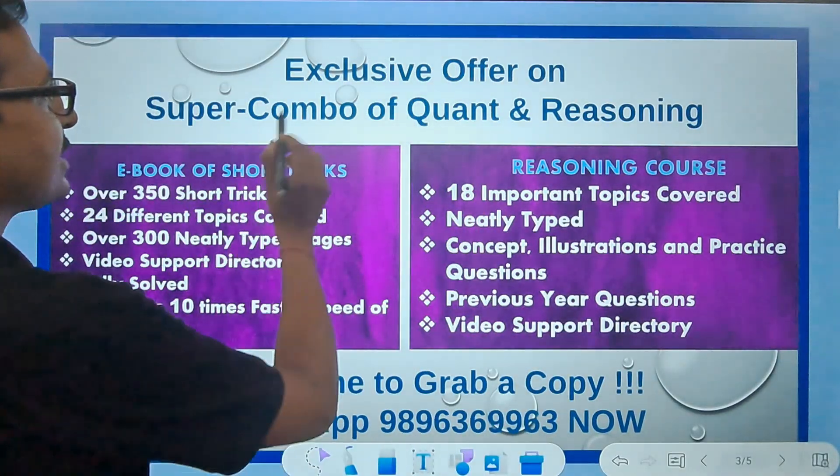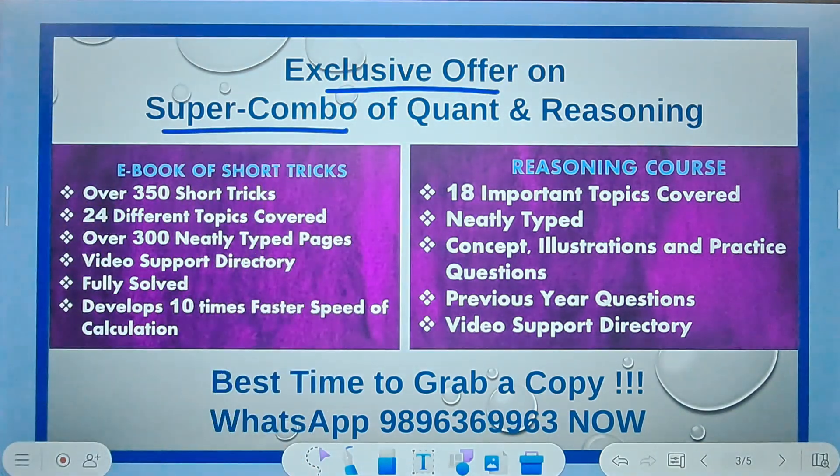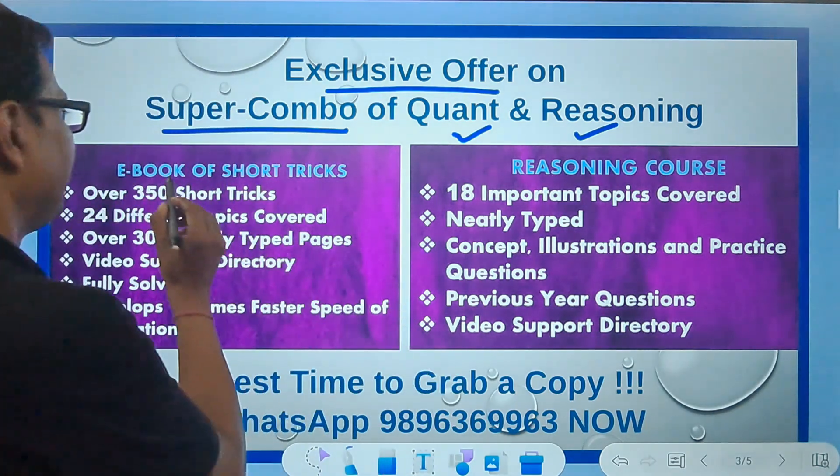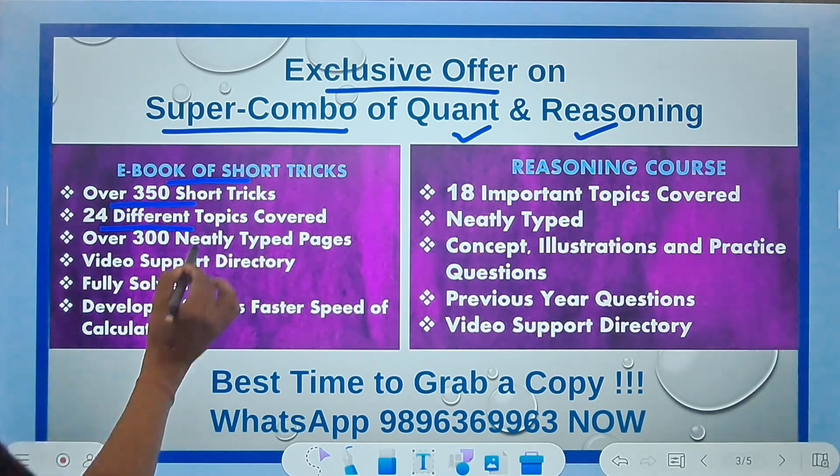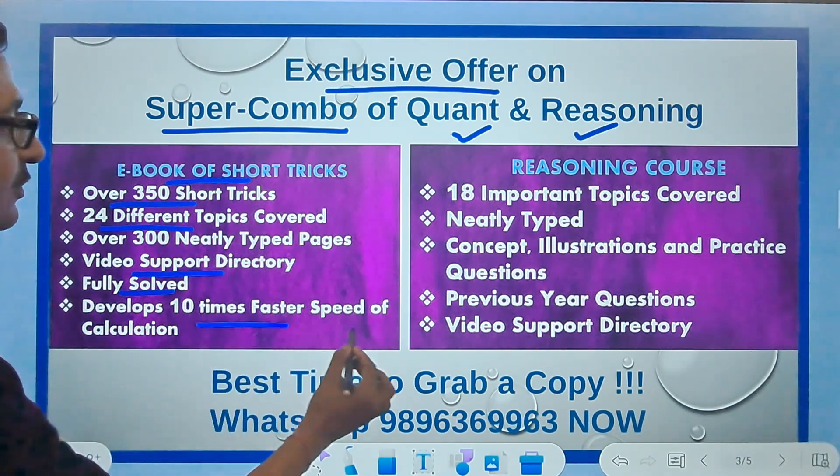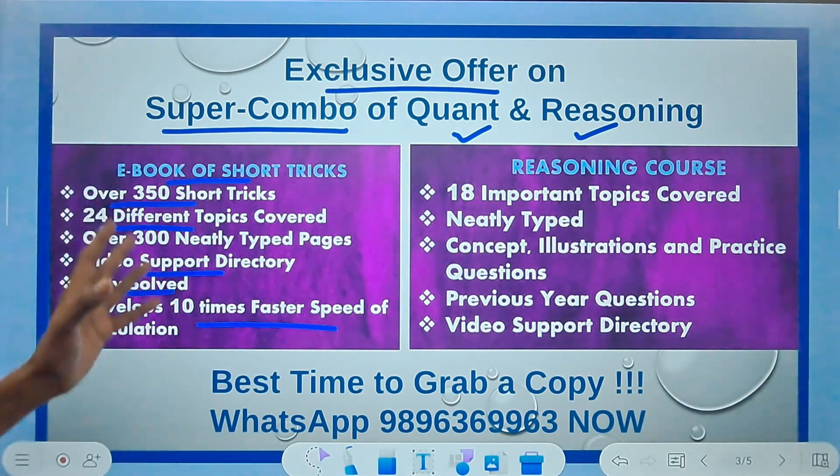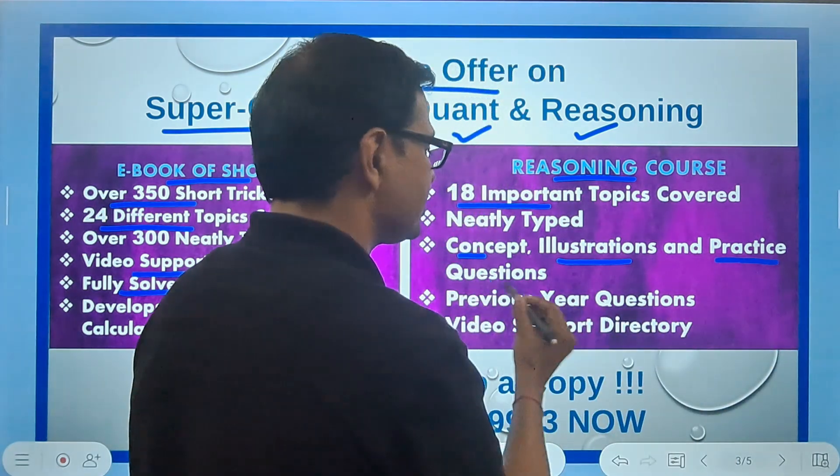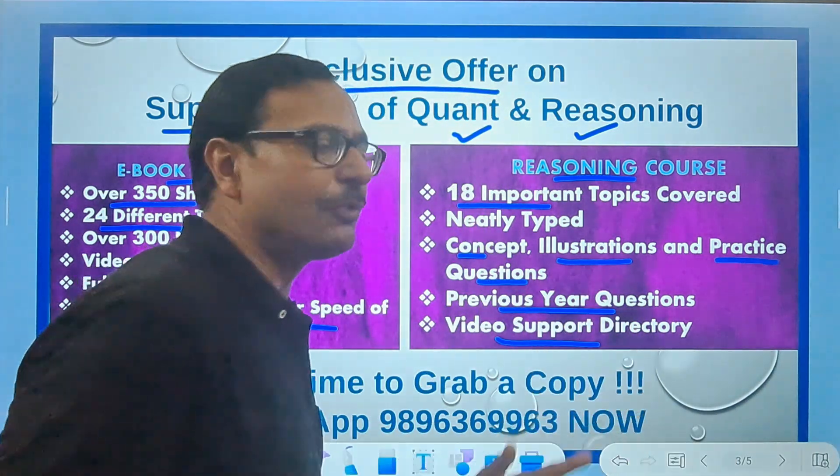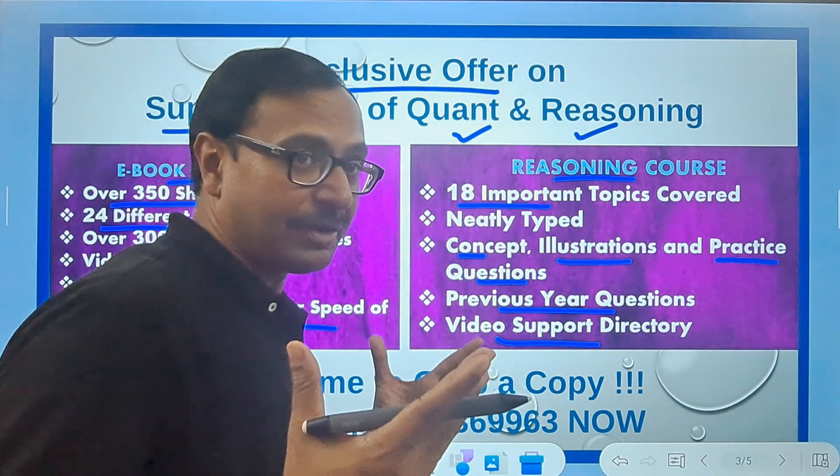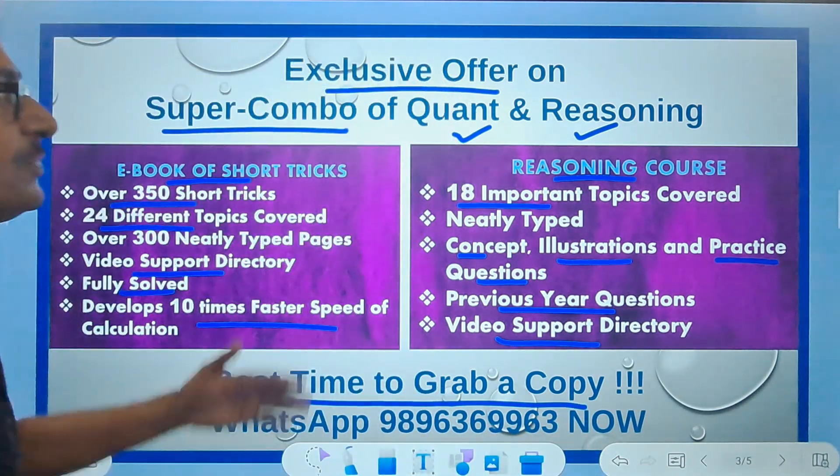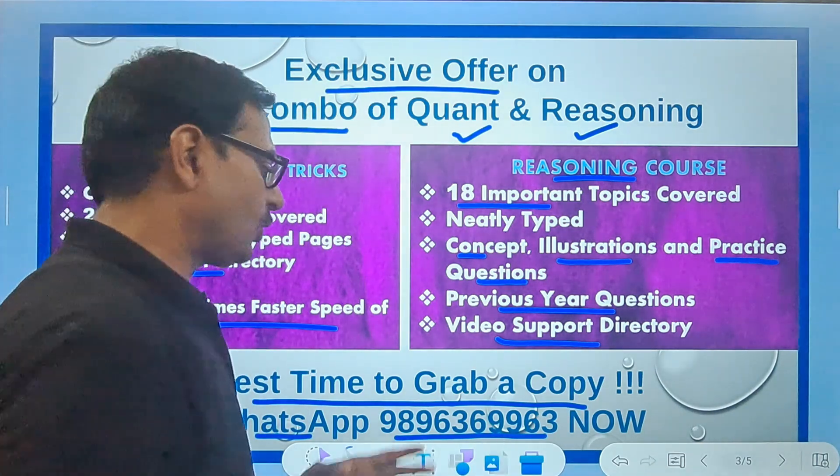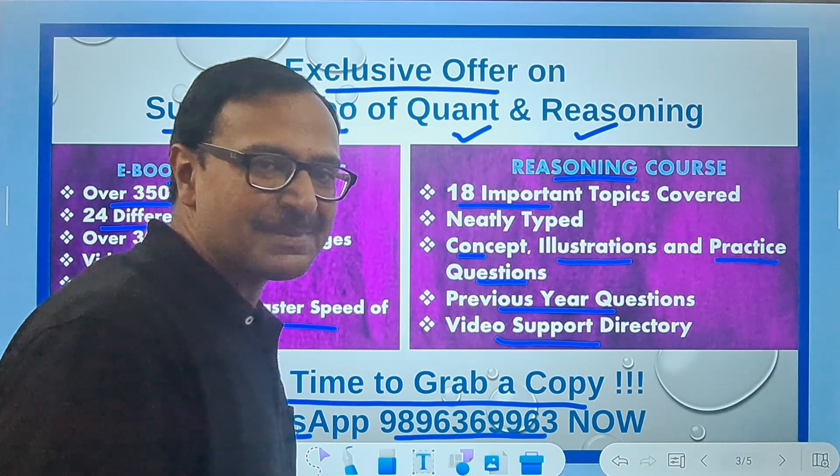Before that, let me tell you about the exclusive offers going on our super combo of quant and reasoning courses. Ebook of short tricks which contains 350 short tricks covering 24 different topics, video support directory, fully solved, 10 times faster speed of calculations. Then we have a reasoning course in which there are 18 topics covered - concepts, illustrations, practice questions, previous year questions and video support directory. Very nominal cost associated with this super combo, one of the best sellers on internet. This is the best time to grab a copy because we are giving an exclusive offer. WhatsApp 9896369963, you can copy it from here or the description also contains every details.